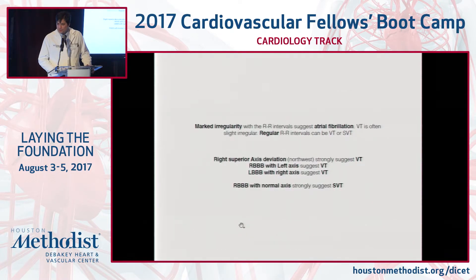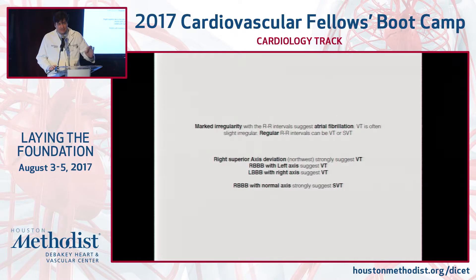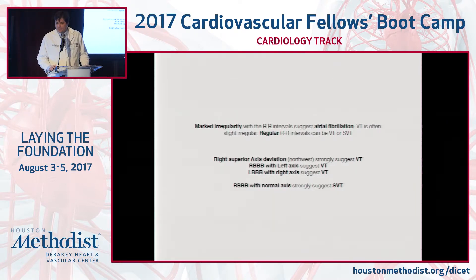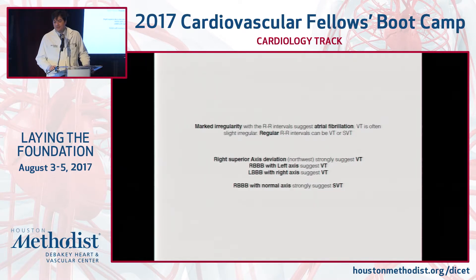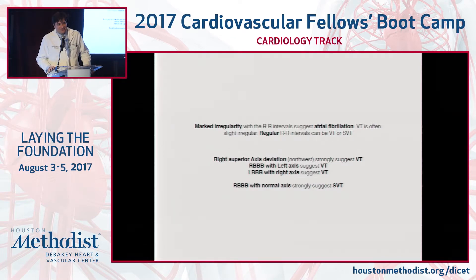On another EKG you can see clearly the P waves. Marked irregularity of the R-R interval suggests atrial fibrillation — it has to be marked. If it's slight, it could just be ventricular tachycardia. Regular R-R intervals could be any of them — SVT or ventricular tachycardia. Right superior axis deviation — northwest axis — strongly suggests ventricular tachycardia. Right bundle with left axis suggests VT. Left bundle with right axis suggests VT. Right bundle with normal axis also suggests ventricular tachycardia.